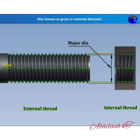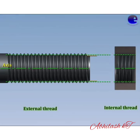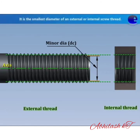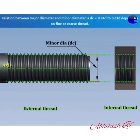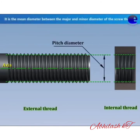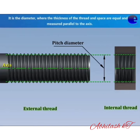The next is minor diameter. It is the diameter of an imaginary cylinder which bounds the root of an external thread. It is also the diameter of an imaginary cylinder which bounds the crest of an internal thread. It is also known as core or root diameter. The next is pitch diameter — it is the diameter of an imaginary cylinder which cuts the screw thread such that the width of the cut thread equals the width of the groove. Pitch diameter of both external and internal threads are equal.